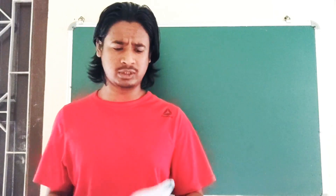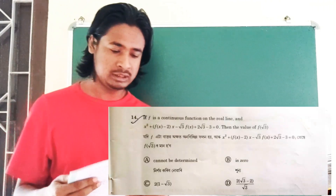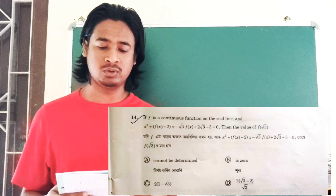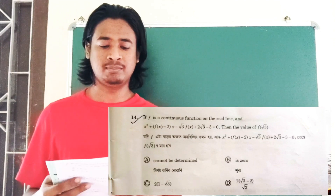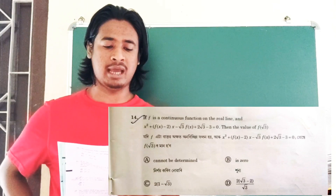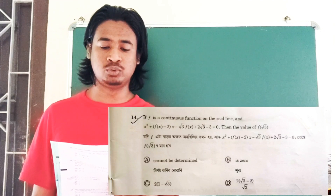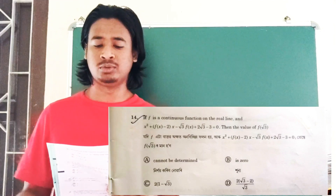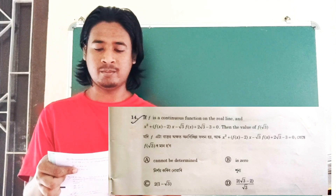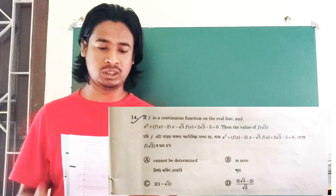So first, question number 14: if f is a continuous function on the real line satisfying the equation x² + f(x) - 2 times (x - √3) times f(x) + 2√3 - 3 equals 0, then find the value of f(√3).